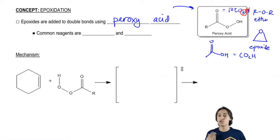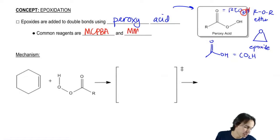Now, you could use any peroxy acid you want to make an epoxide, but the common ones that are used are MCPBA and MMPP.